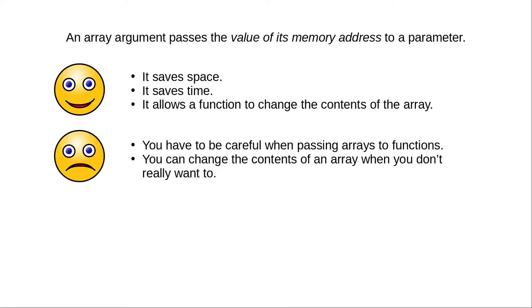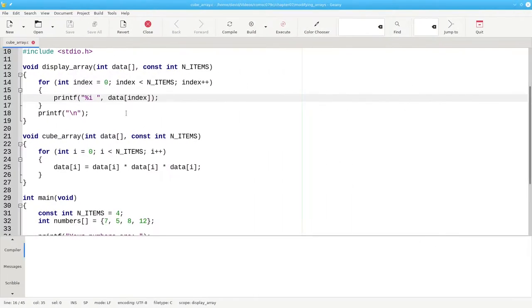The bad news is that you have to be careful when you pass an array to a function, because you can change its contents even if you didn't want to. Is there a way to avoid the bad news, to prevent yourself from accidentally changing an array's elements?